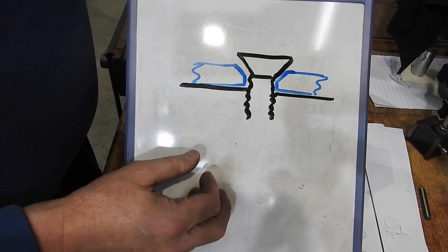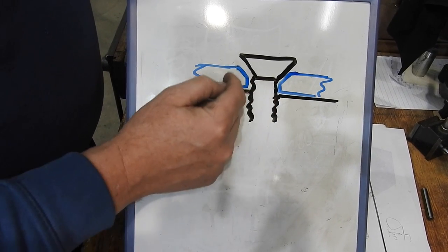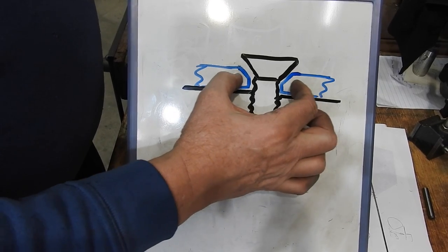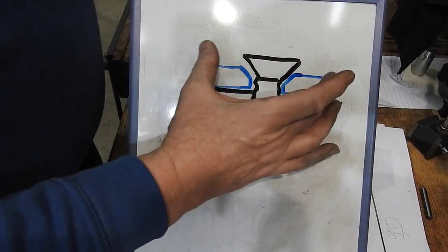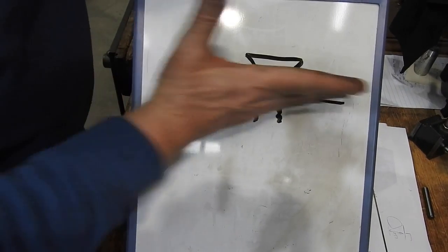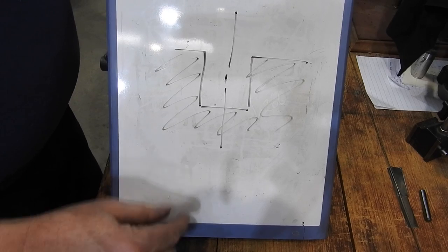I can use something else, and in this particular situation I may actually counterbore that and put a socket head cap screw in there, relying on the float there. And once again, the clamping is vertical—there isn't a horizontal component to it.